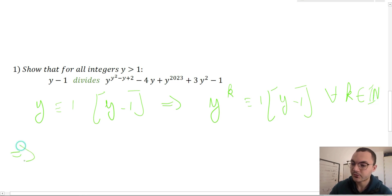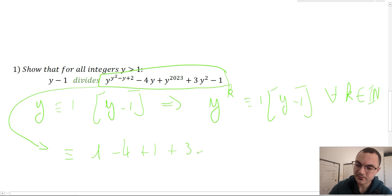That's a way to get rid of the complex exponent in here. So our expression becomes congruent to 1 - 4 + 1 + 3 - 1, which is congruent to zero mod y minus one.